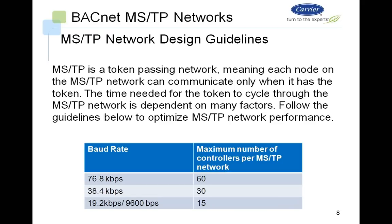MSTP network design guidelines: MSTP is a token-passing network — MS stands for Master-Slave, TP for token passing. A device can only communicate when it has the token, so time is needed to pass the token throughout the nodes. We have put together a chart for optimizing network performance based on baud rate and number of controllers. Using the default baud rate of 76.8k, there's a maximum of 60 controllers. As you reduce the baud rate, you also reduce the maximum number of controllers — at 9600 and 19.2k, you're down to 15 controllers. This is a guideline; if you experience communication issues and have exceeded these numbers, the first recommendation is to reduce the number of controllers to meet these guidelines.